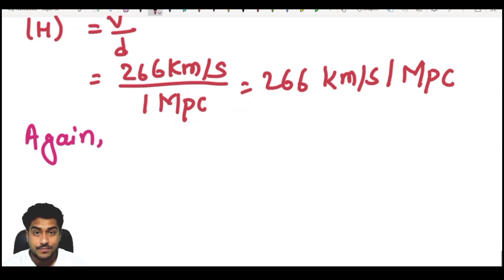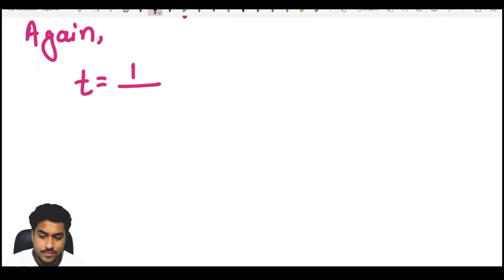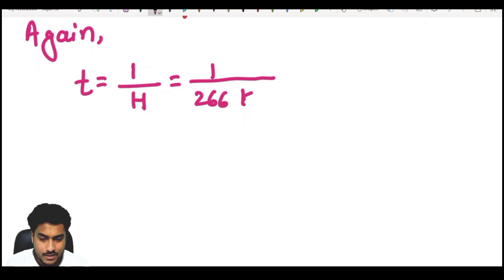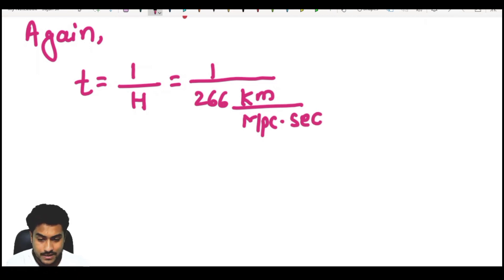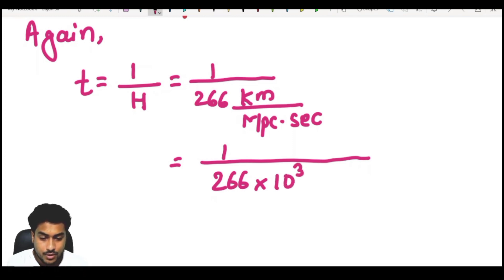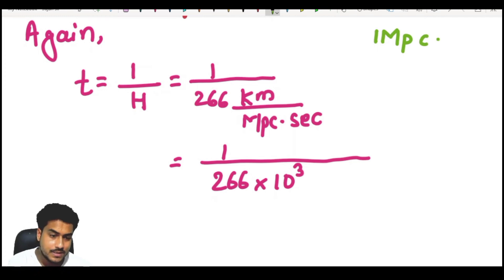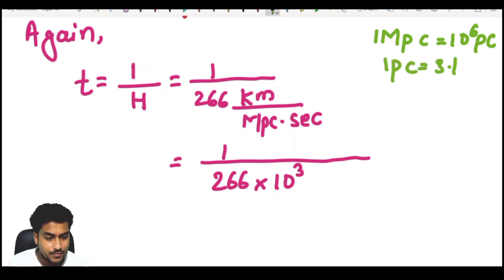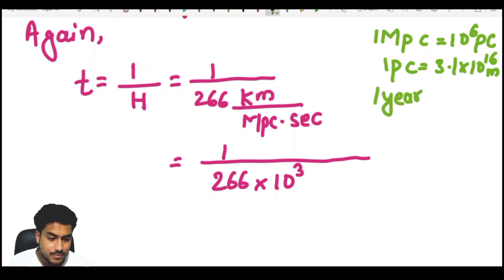Now we have to calculate the time of collision. The time of collision is given by 1 divided by the Hubble parameter. So we take 1 over 226 kilometers per megaparsec per second. Kilometer means 1000, so we write 10 to the power 3. Now we convert megaparsec: 1 megaparsec equals 10 to the power 6 parsecs, and 1 parsec equals 3.1 into 10 to the power 16 meters. Also, 1 year equals 3.15 into 10 to the power 7 seconds.